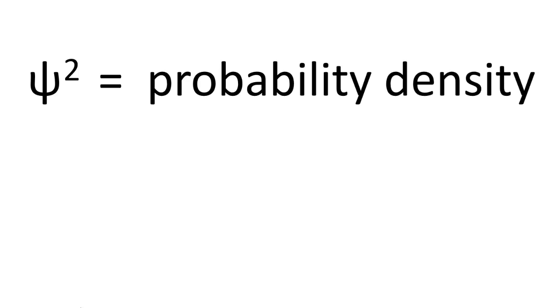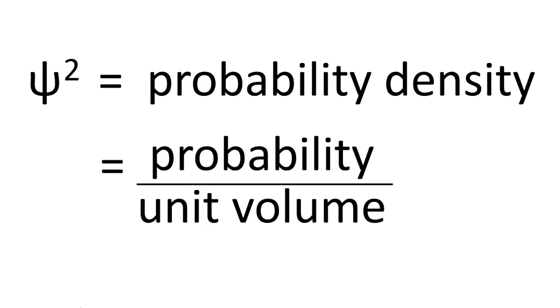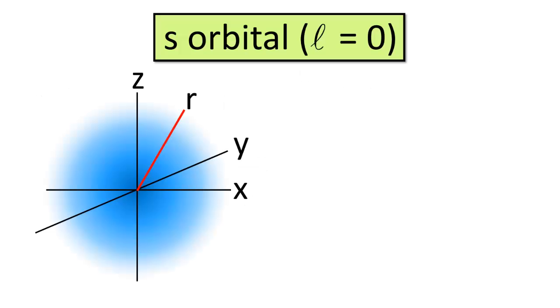So let's get into the shapes, starting with the shapes of the S orbitals. The magnitude of psi squared represents probability density, which is the probability per unit volume of finding an electron at a given point in space. In this image, the orbital is portrayed such that the more heavily shaded regions have a larger probability density.